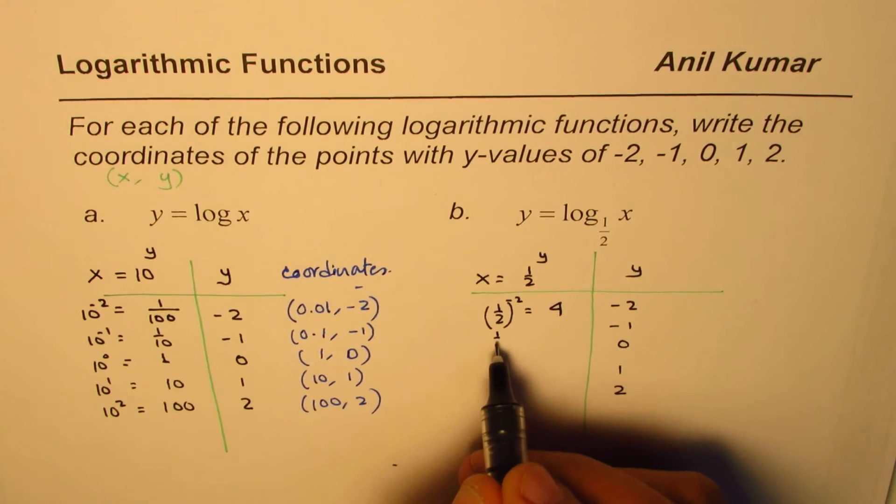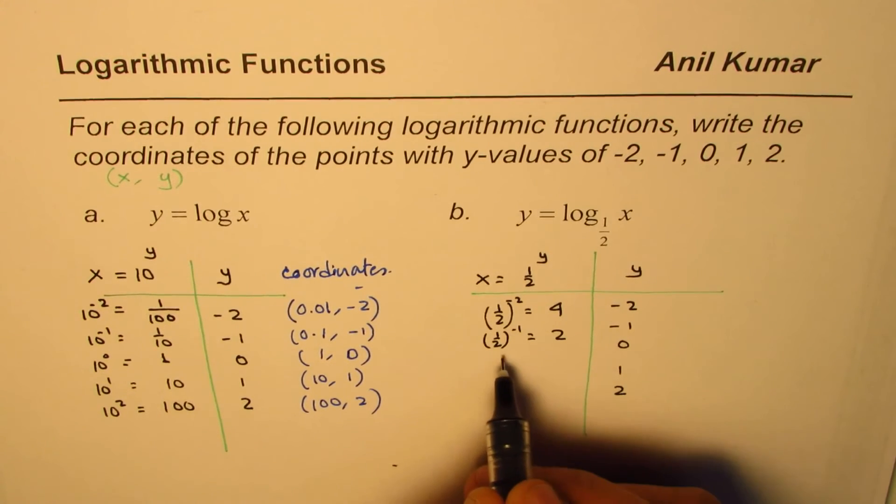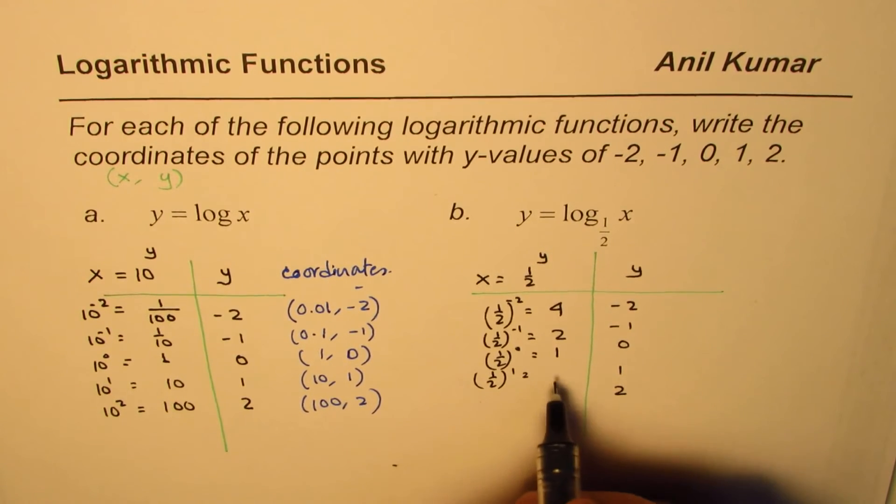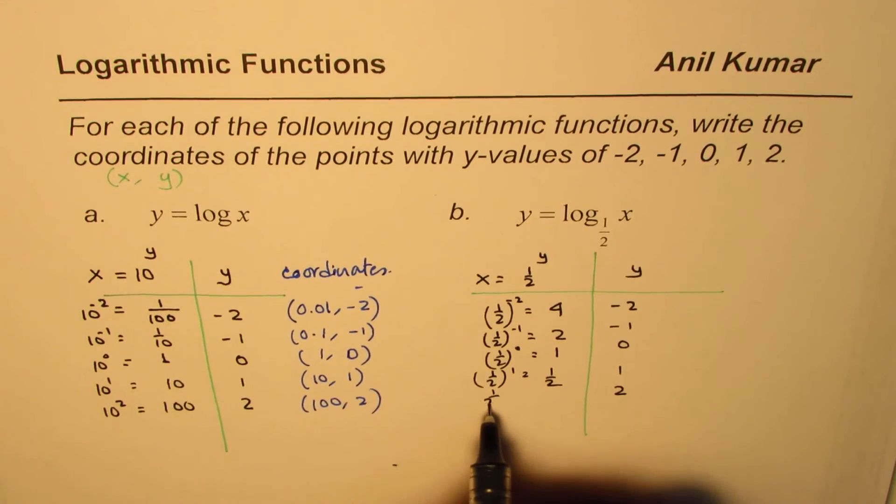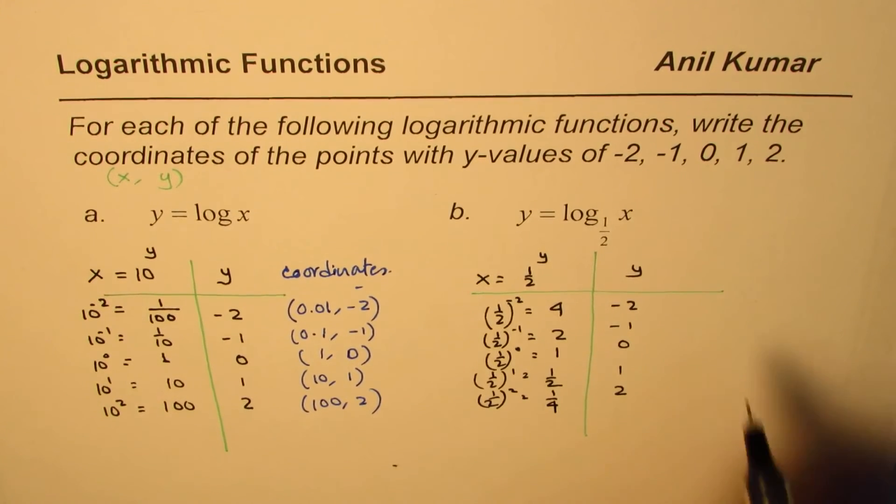Now, here we have half to the power of minus 1, that is 2. Half to the power of 0, anything to the power of 0 is 1. Half to the power of 1 is half. And half to the power of 2 will be 1 over 4.